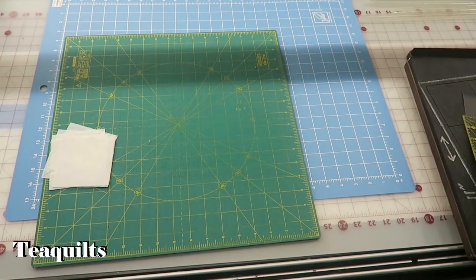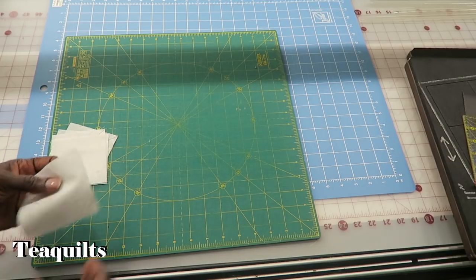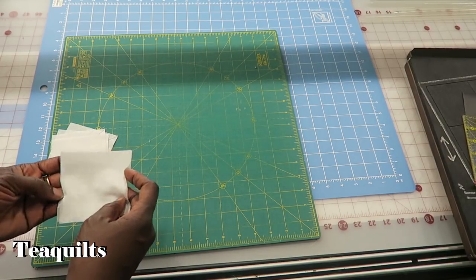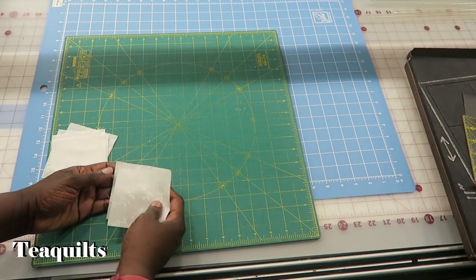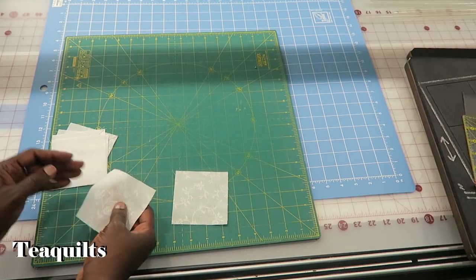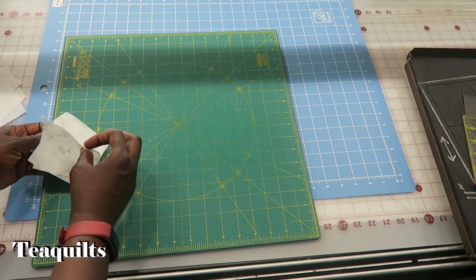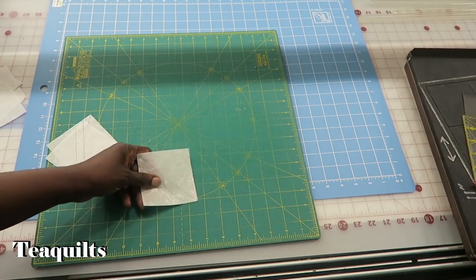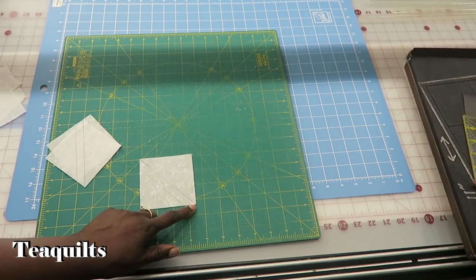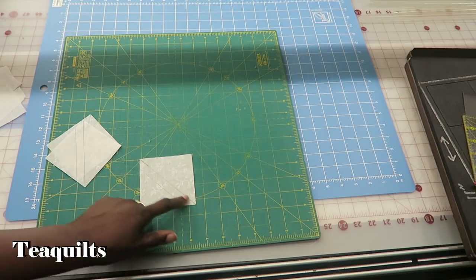Very simple cutting, and so now we can go ahead and get to the first step. You want to take your white three and a half inch squares, and on the wrong side of those, you want to draw diagonal lines. I have already done that on this one. You want to draw a line diagonally from corner to corner.